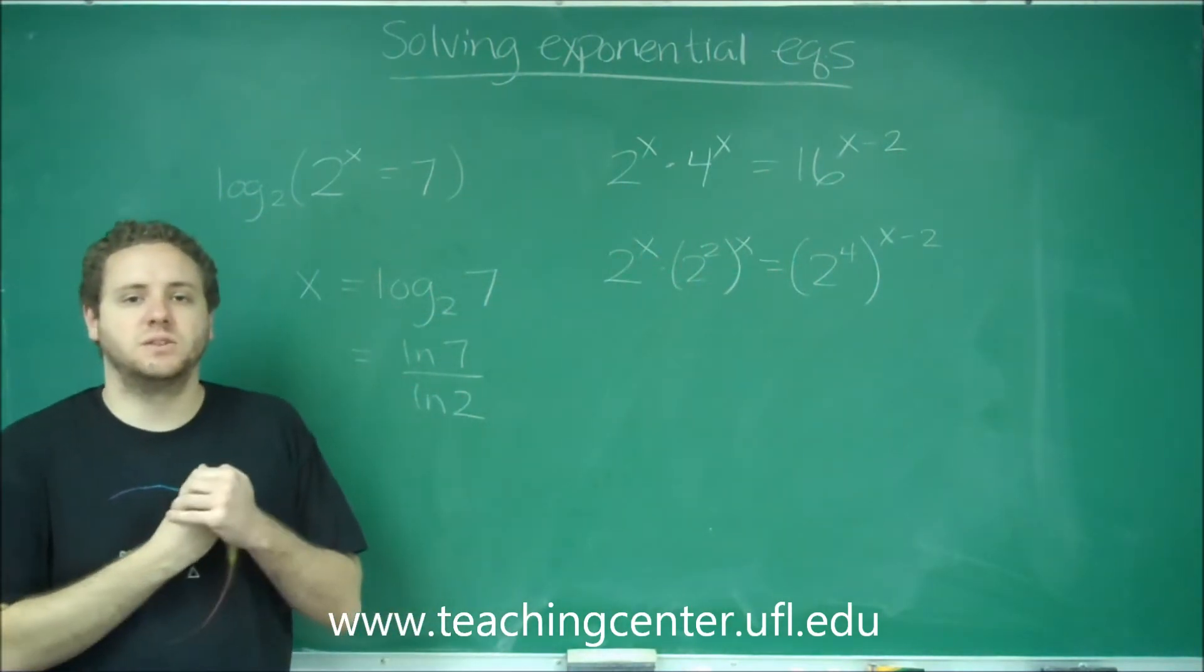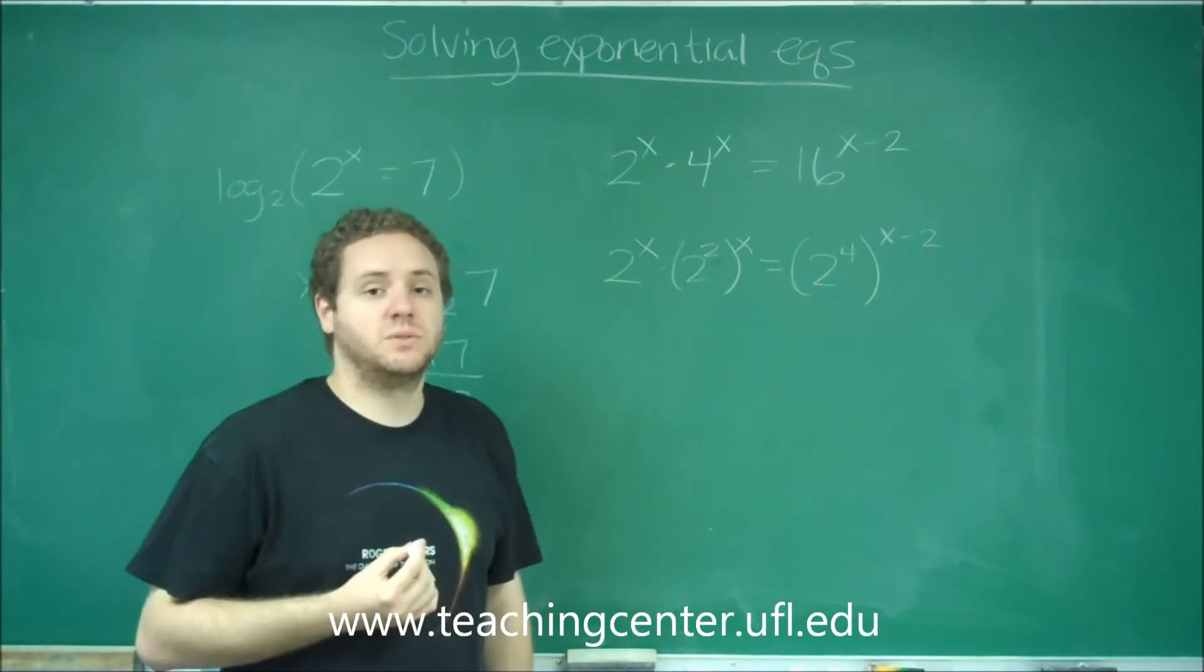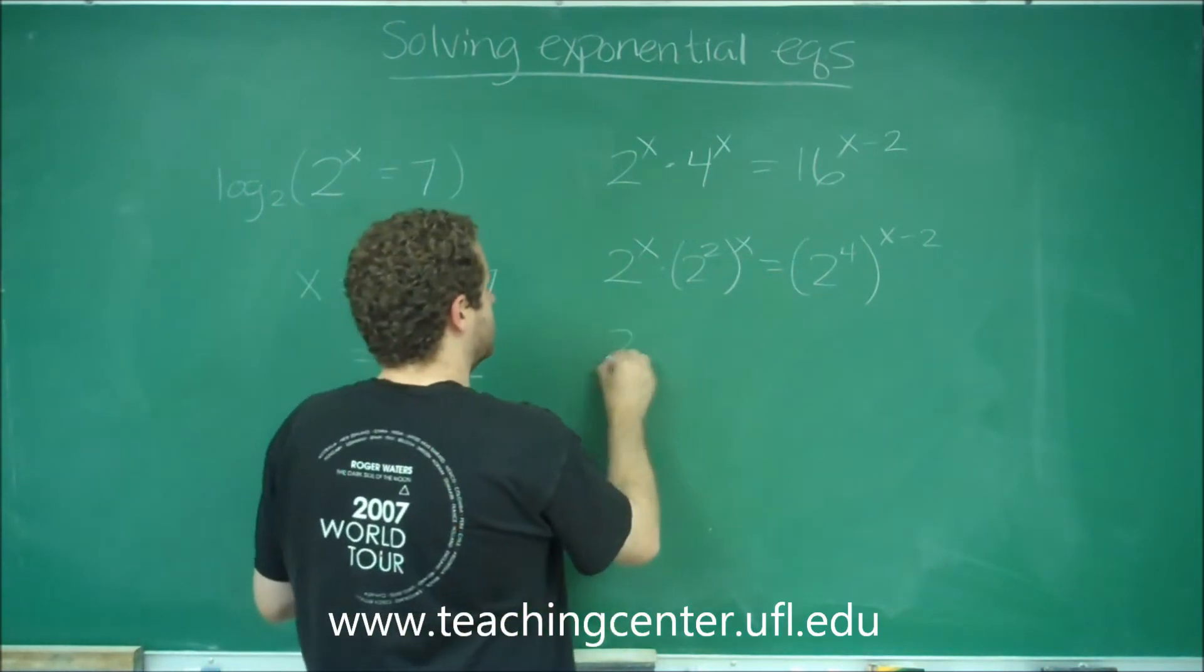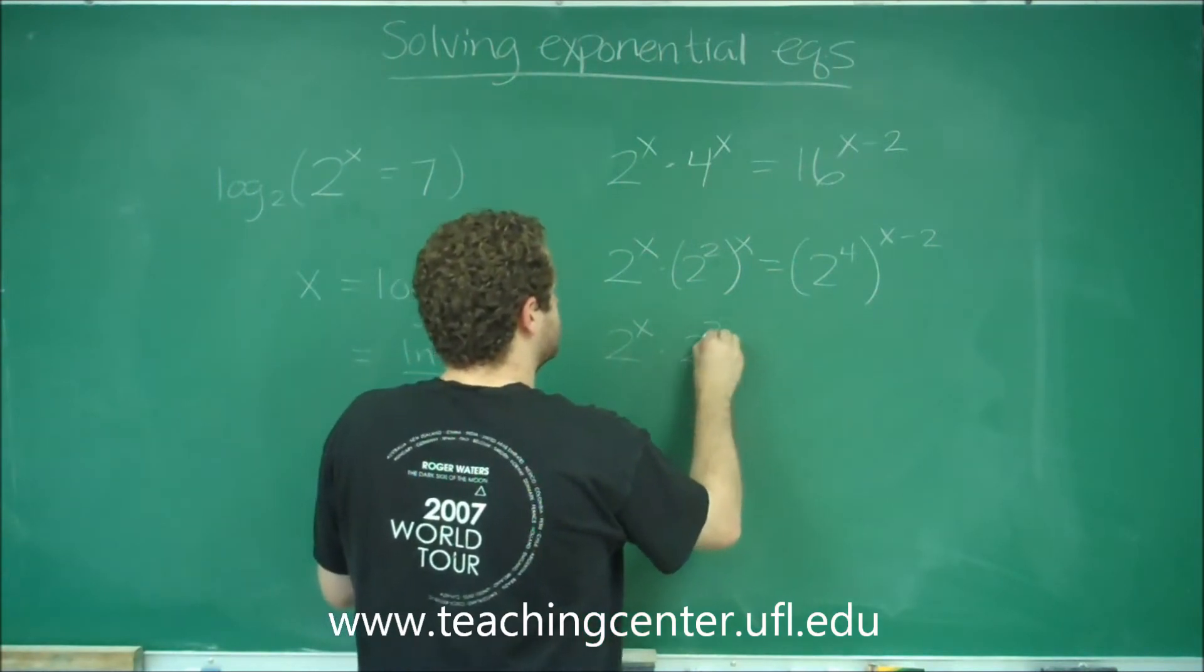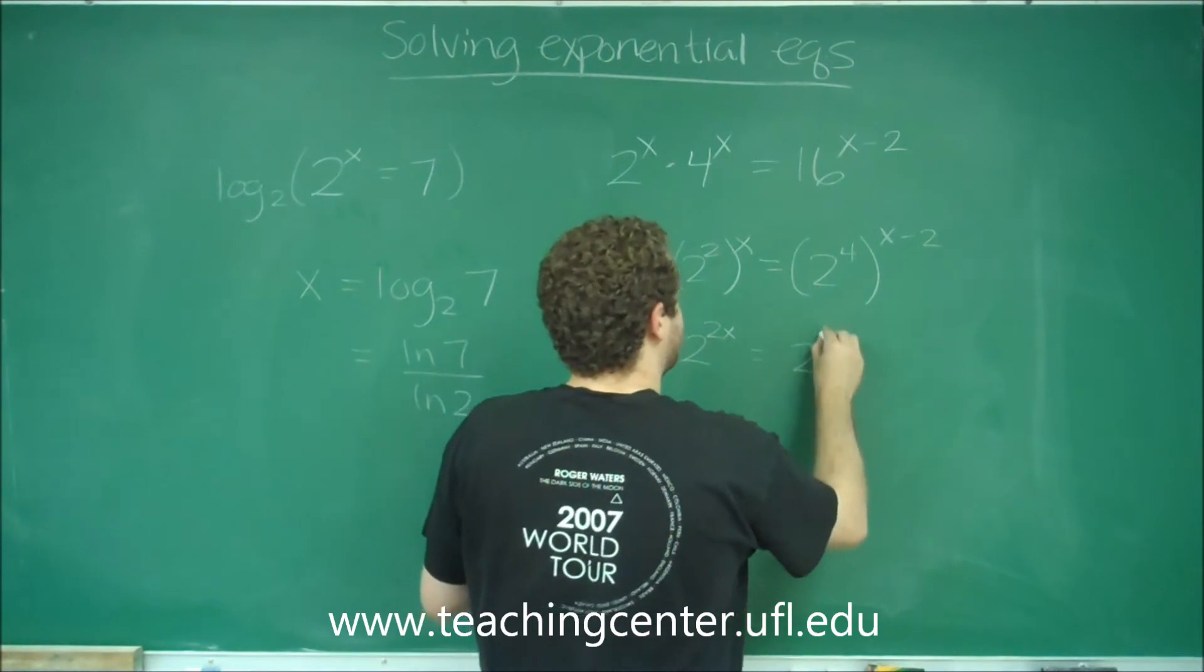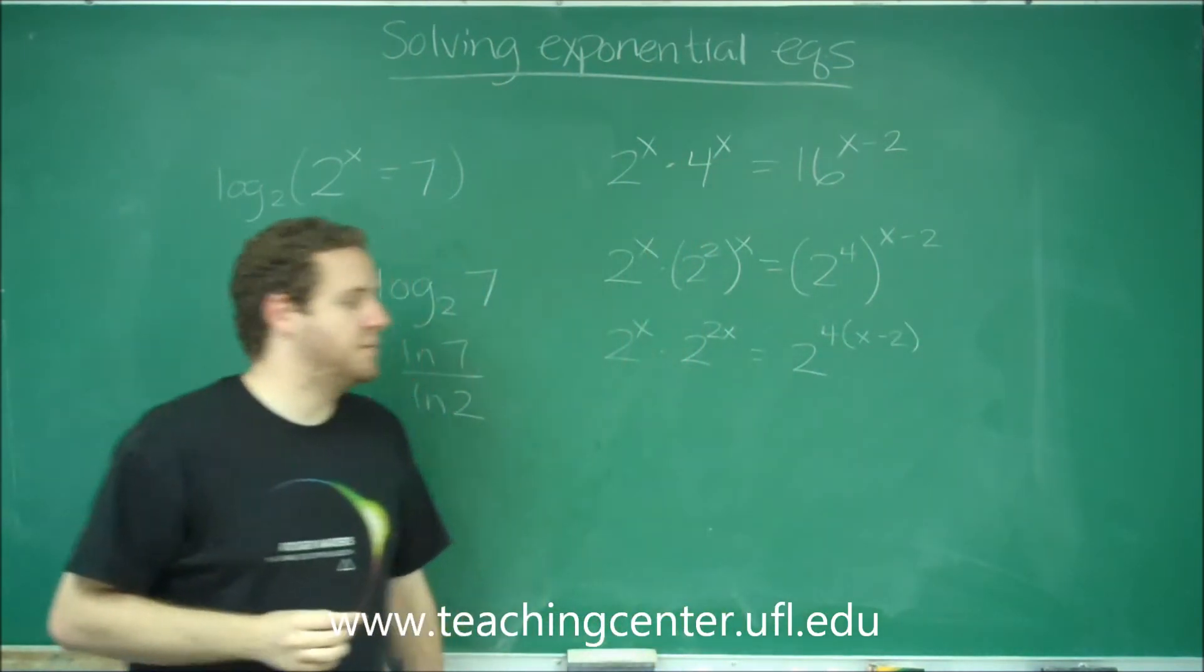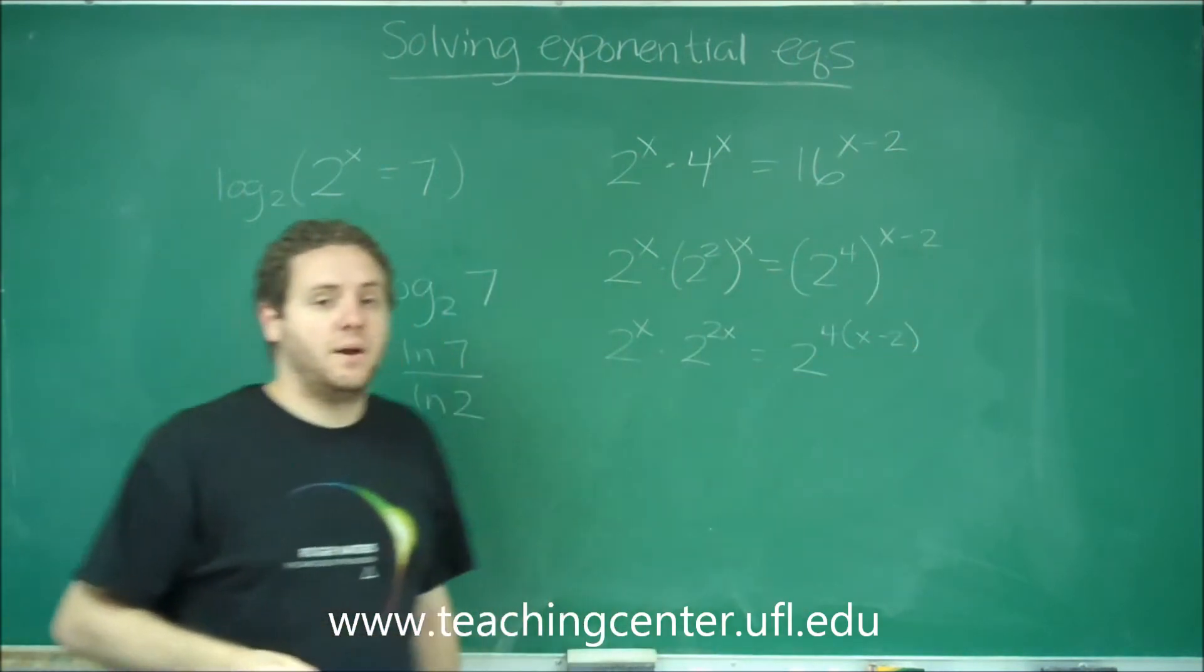So what we've done here is we've made everything a base 2. Now we can use some of our exponential rules. If we have something that's raised to a power raised to another power, that just becomes multiplication. So this is times 2 to the 2x. Over here, we get 2 to the 4 times x minus 2. It's important that that needs to be in parentheses. The 4 is times this entire power.